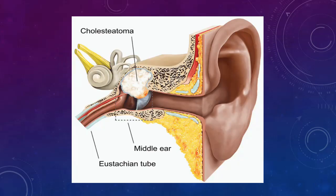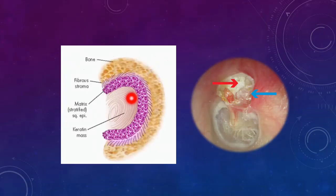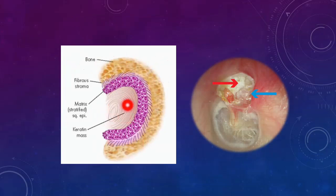This is a picture showing the cholesteatoma in the attic region of the middle ear. As you can see, this is the bony part. This is the central white mass that consists of keratin debris. This is the matrix, that is the stratified squamous epithelium, which is resting on a fibrous stroma.